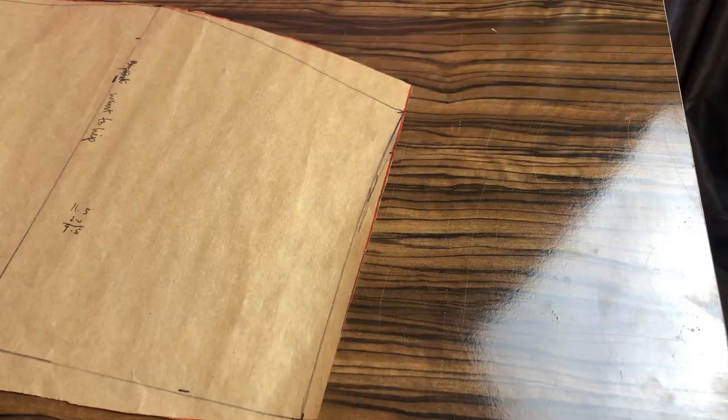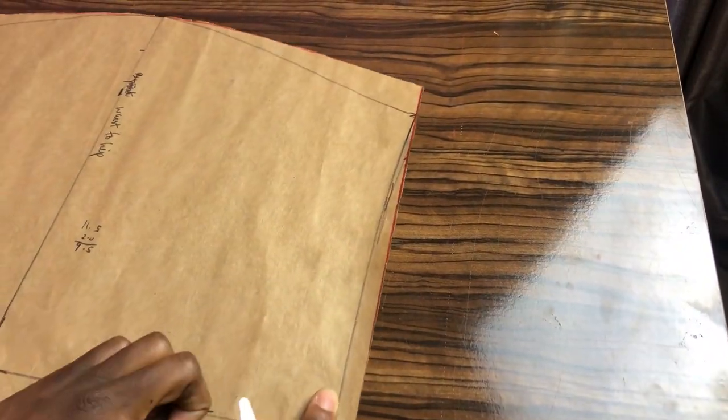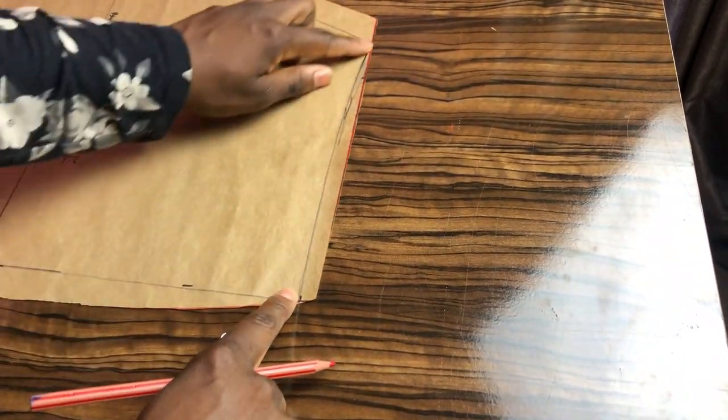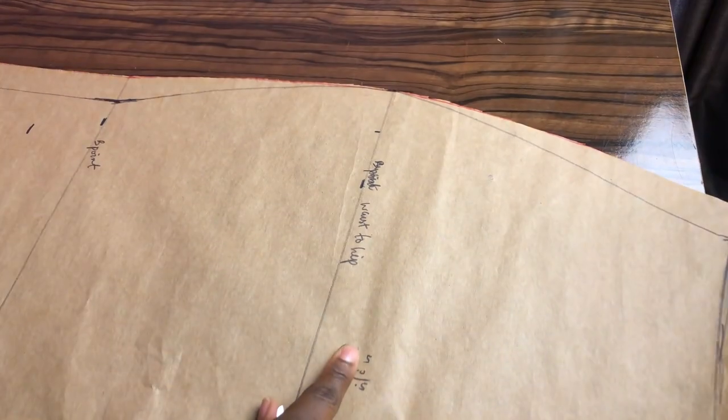For the front, just cut out all the extra markings you made to draft the back. So cut through the half inch you marked down at the center front and then cut out the zip allowance added here.